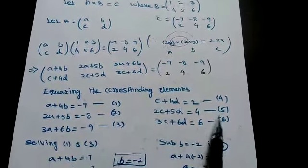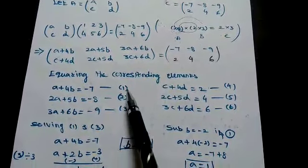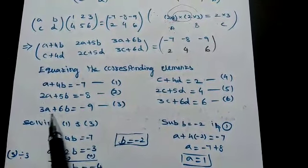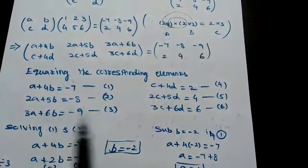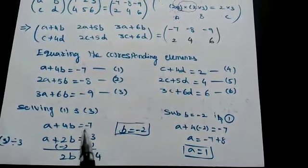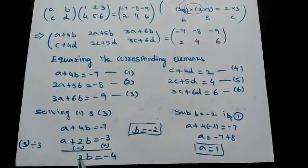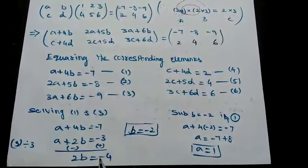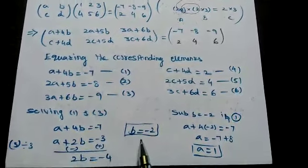Now simplify these 6 equations to find a, b, c, d. Solving equations 1 and 3: divide equation 3 by 3 to get a+2b = -3. Subtract this from equation 1 (a+4b = -7): the a's cancel, giving 2b = -4, so b = -2.